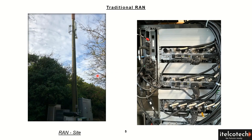As we have seen in the previous lecture, the telco network consists of three subnetworks, and one of them is the radio access network. Here we are talking about the radio access network in more detail. On the left side, I have taken a picture of a cell site or a mast, and this can be of different types.